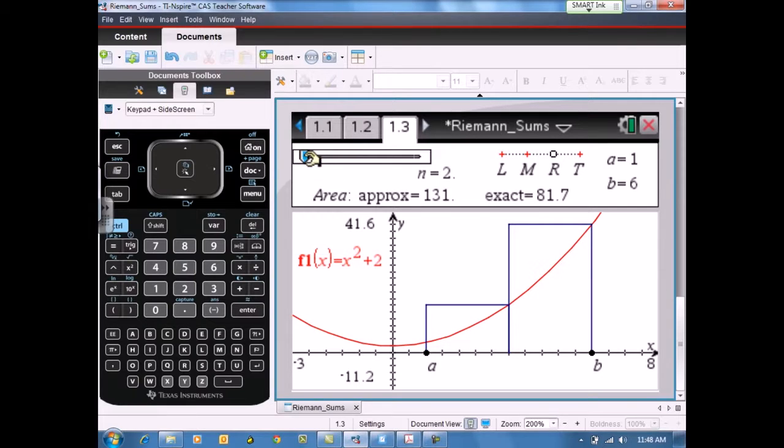They also go back to see what the area approximation of the two rectangles would be and then increase them to 4, 8, 16, 32 so that they can see that the approximation of the sums of the areas of the rectangles is actually approaching the exact value of the area under the curve.